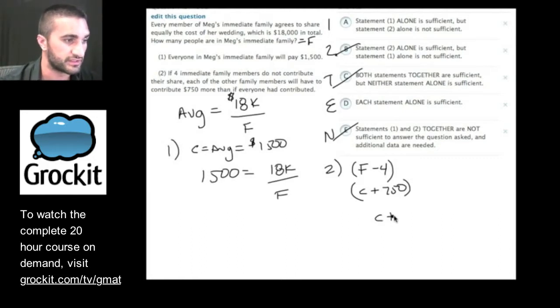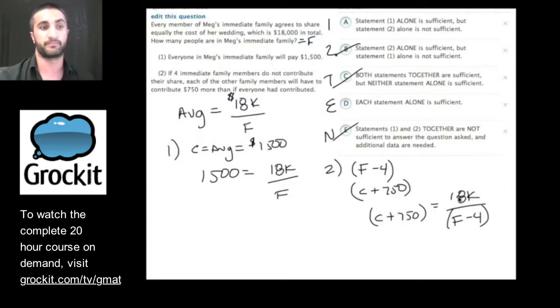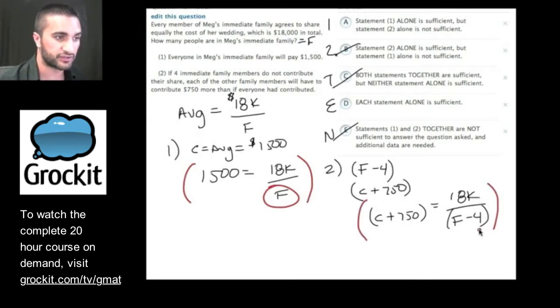But the total is still the same. So the average, which is in this case C plus 750, is equal to the total, still the same, divided by the number of people. This time it's four less. So if four fewer people pay 750 each more, we still have a situation where now we have one equation and two unknowns, so I don't think we can solve.